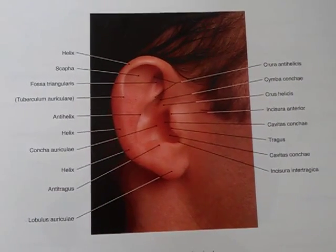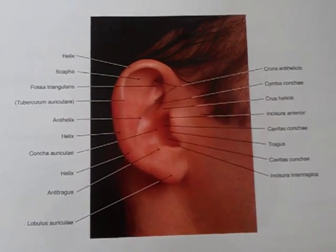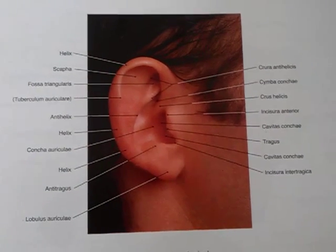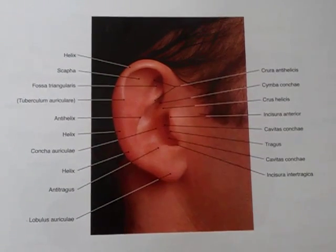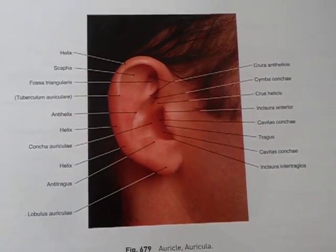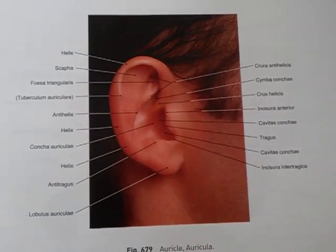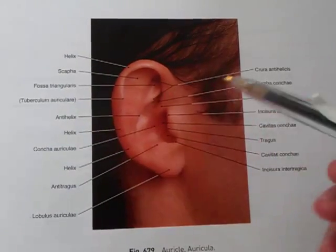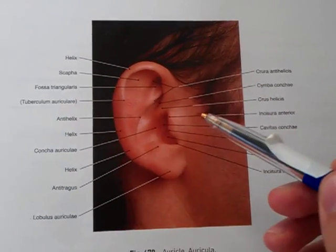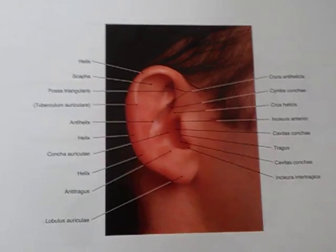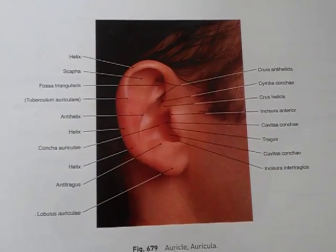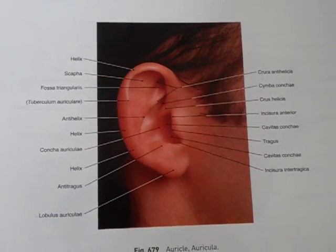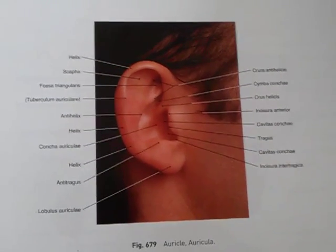Question 145: The external ear and tympanic membrane. The external ear consists of the auricle and the external acoustic meatus, which goes all the way into the tympanic membrane.